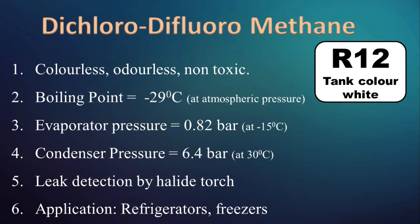R12, Dichlorodifluoromethane, is colorless, odorless, non-toxic, non-corrosive, non-flammable, and was very popular in the HVAC industry. Boiling point of R12 is minus 29 degree Celsius, with evaporator pressure of 0.82 bar and condenser pressure of 6.4 bar. It has a lower latent heat of vaporization, which helps to use less sensitive regulating mechanisms in the system. R12 leak detection can be done by Halide torch. Its cylinder color is white. Applications of R12 are in refrigerators, freezers, and AC systems with rotary compressors.